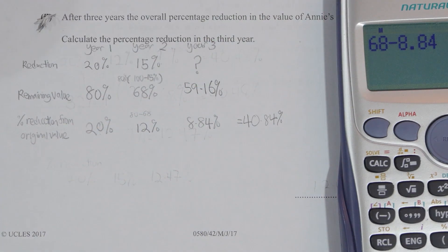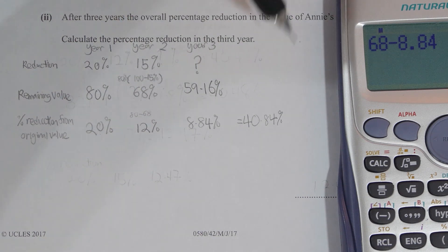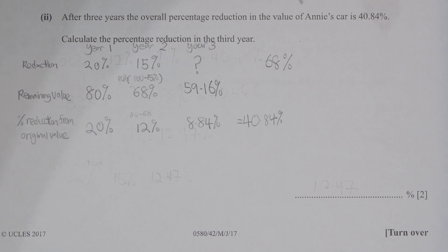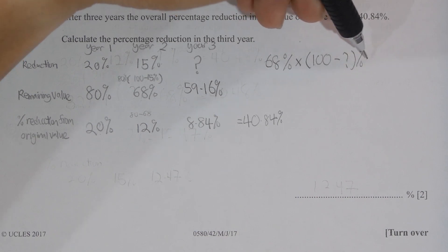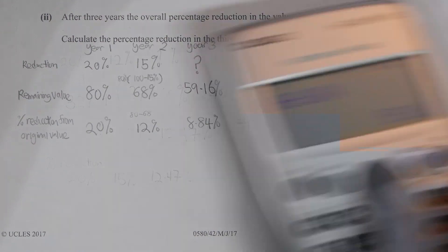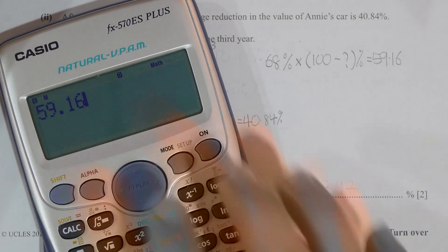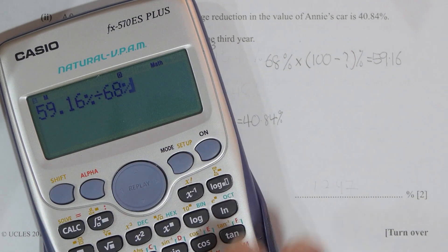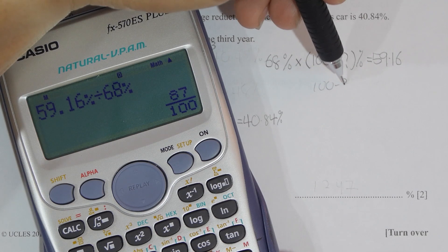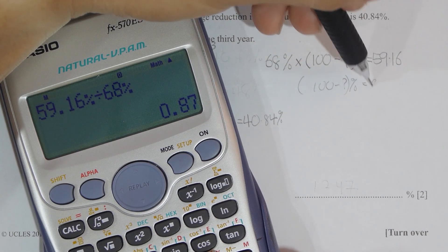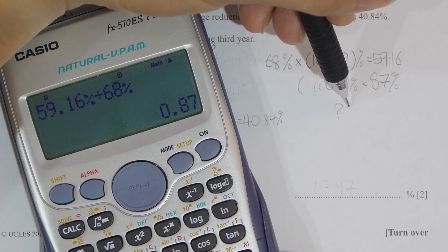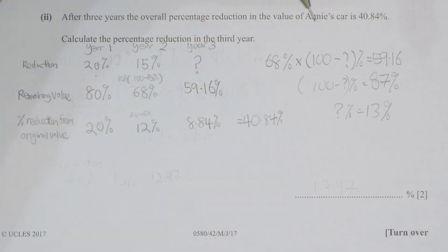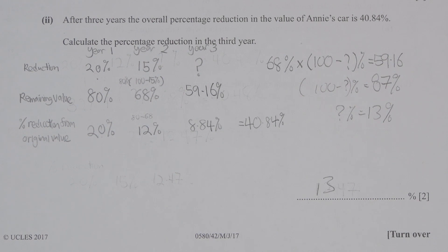To find the remaining value, take 68% minus 8.84%, giving 59.16%. The question asks how much it reduced from 68% to 59.16%, so you take 68% multiplied by (100% minus the reduction) equals 59.16%. By solving, you get 13% as the final answer. For this type of question, I usually suggest students draw it out as it gives a better understanding of what the question is asking.